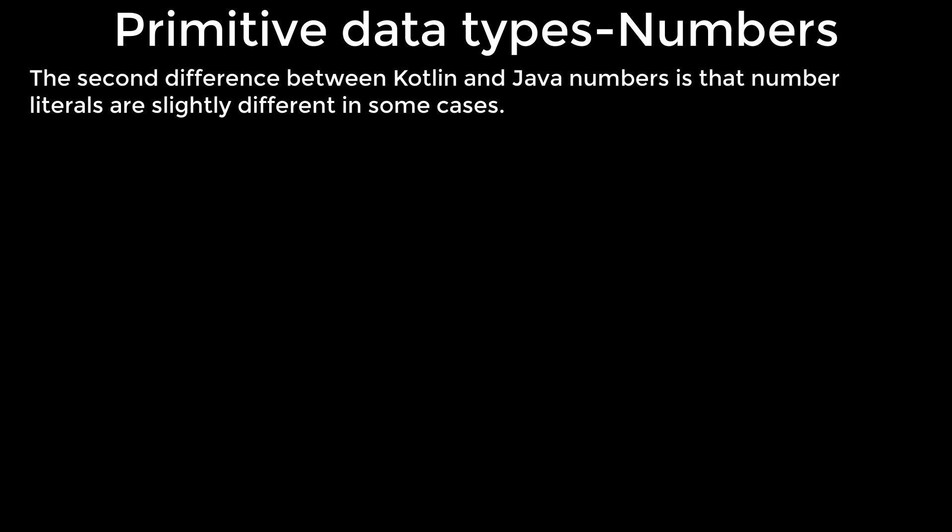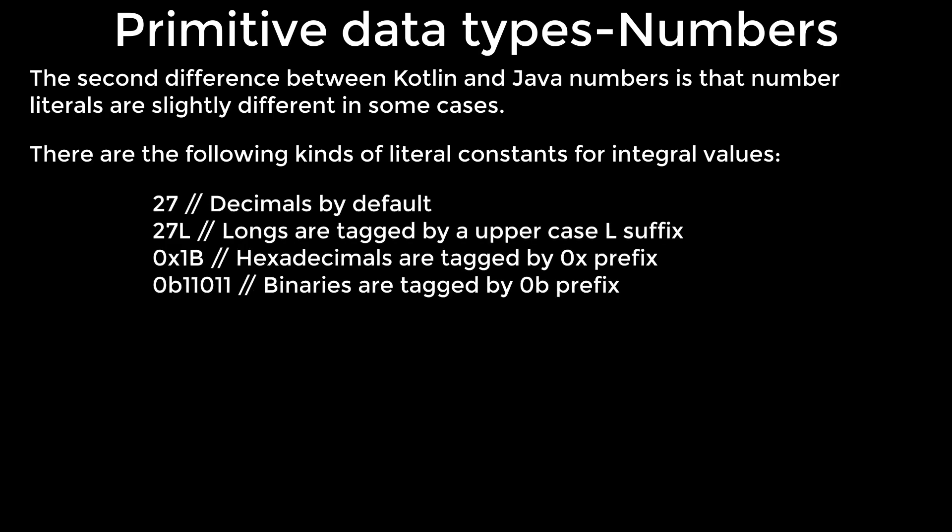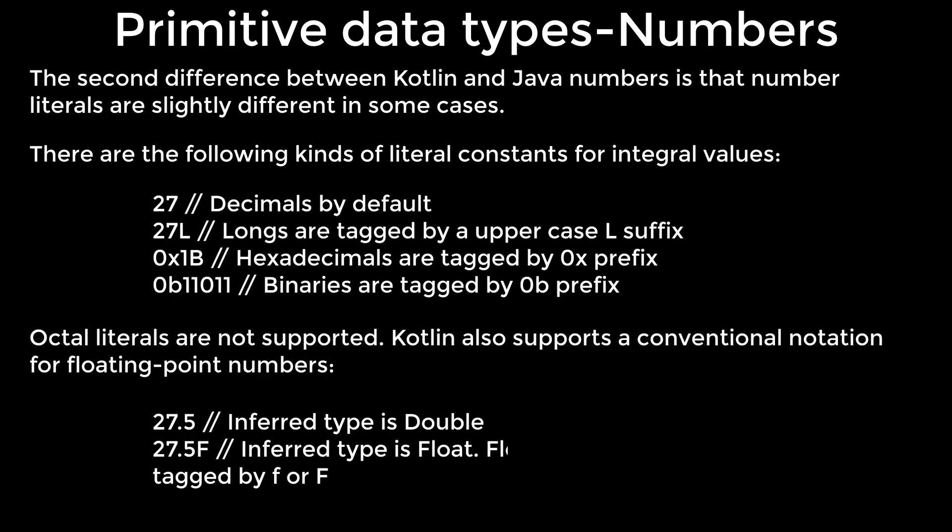The second difference between Kotlin and Java numbers is that number literals are slightly different in some cases. There are the following kinds of literal constants for integral values. Octal literals are not supported. Kotlin also supports a conventional notation for floating point numbers.